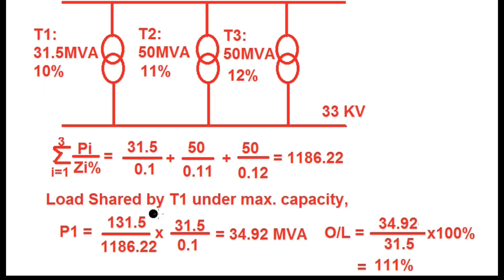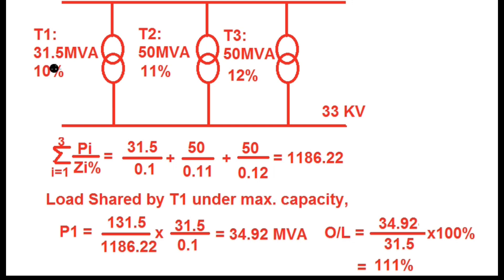We can now calculate the load shared by transformer 1 under maximum substation capacity of 131.5 MVA. P1 = (131.5 / 1186.22) × (31.5 / 0.1), which gives P1 = 34.92 MVA. However, the maximum capacity of T1 is 31.5 MVA, so it will be running under overload condition at 111%.